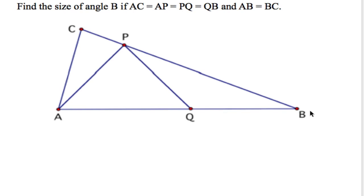Here's an explanation to an interesting problem regarding isosceles triangles. Find the size of angle B if AC equals AP equals PQ equals QB and AB equals BC.